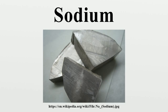The free metal does not occur in nature but instead must be prepared from its compounds. Sodium is the sixth most abundant element in the Earth's crust and exists in numerous minerals such as feldspars, sodalite, and rock salt. Many salts of sodium are highly water-soluble. Sodium ions have been leached by the action of water from the Earth's minerals over eons, so that sodium ions are the most common dissolved elements by weight in the oceans.